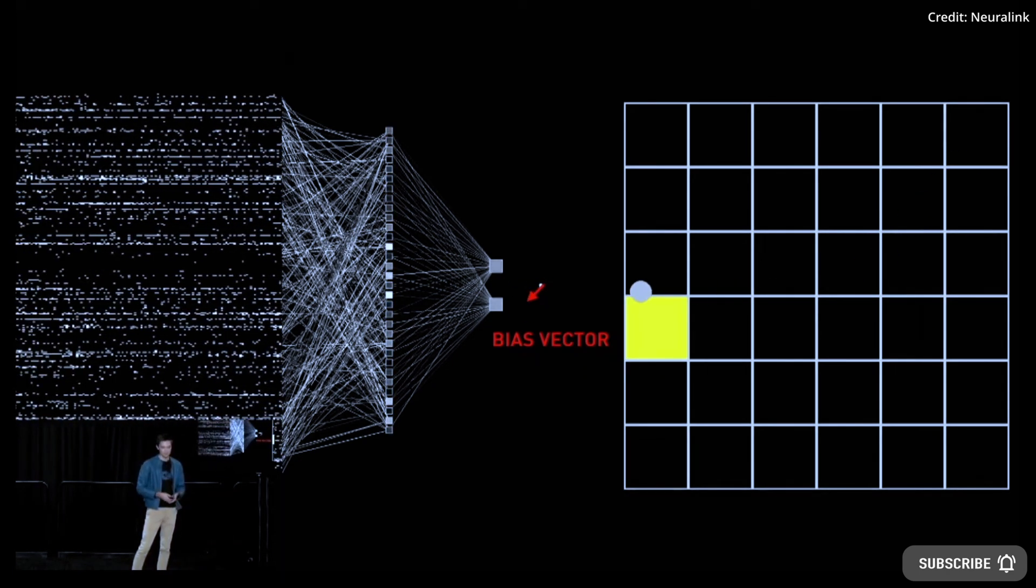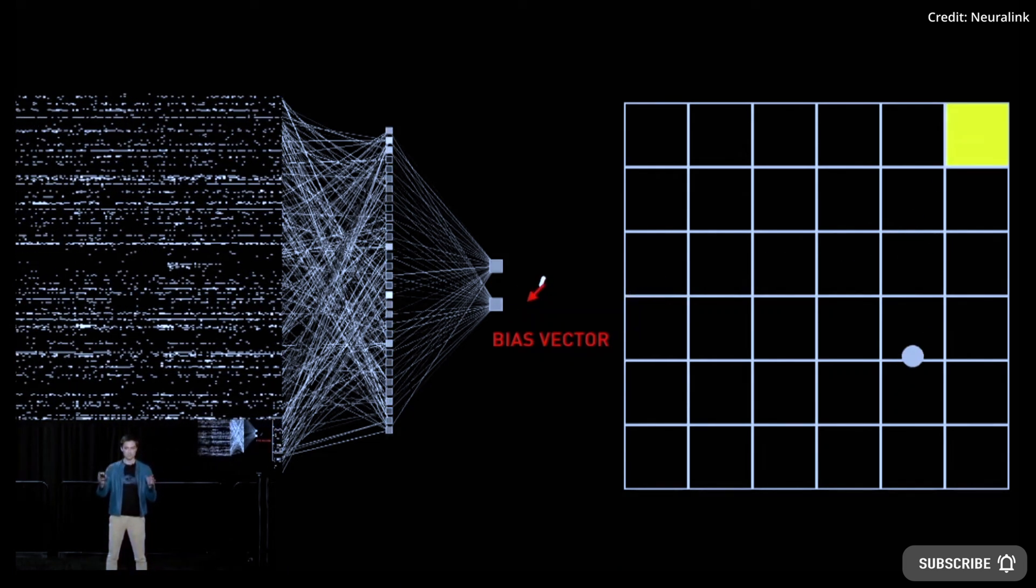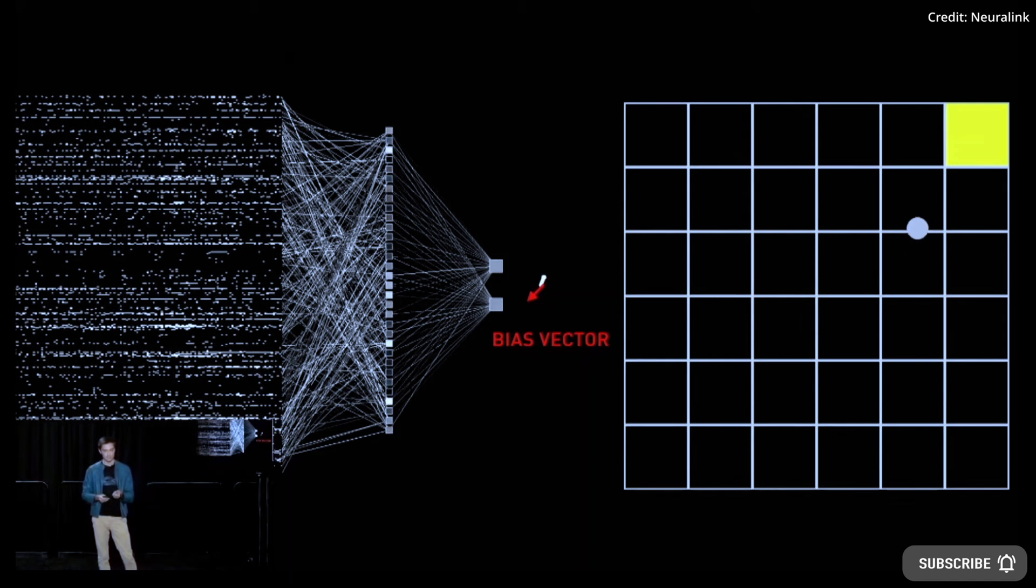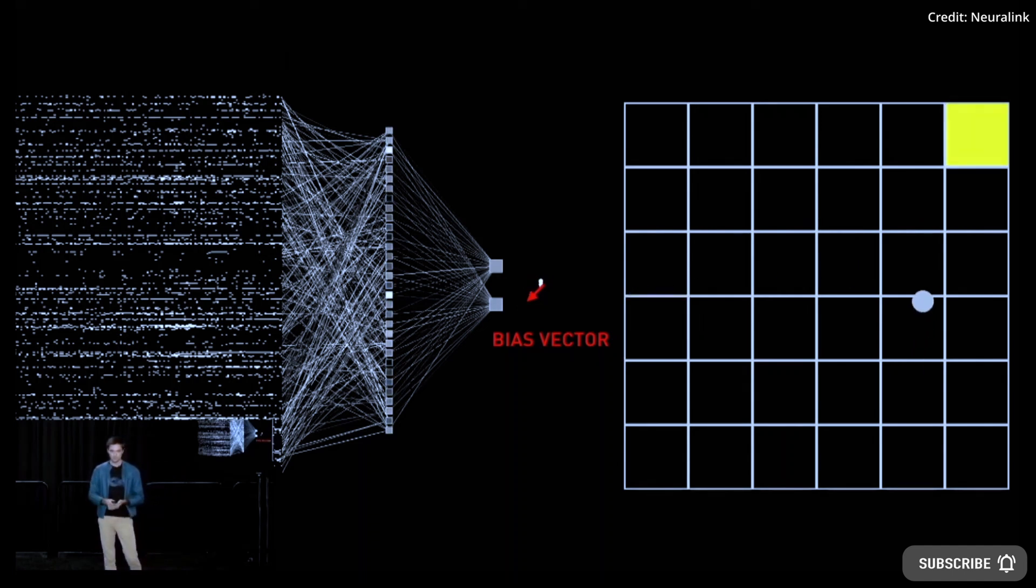Users would initially learn to control a virtual mouse. Later, as users get more practice, and the adaptive decoding machine learning algorithms continue improving, Neuralink expects that users would be able to control multiple devices, including a keyboard or a game controller.